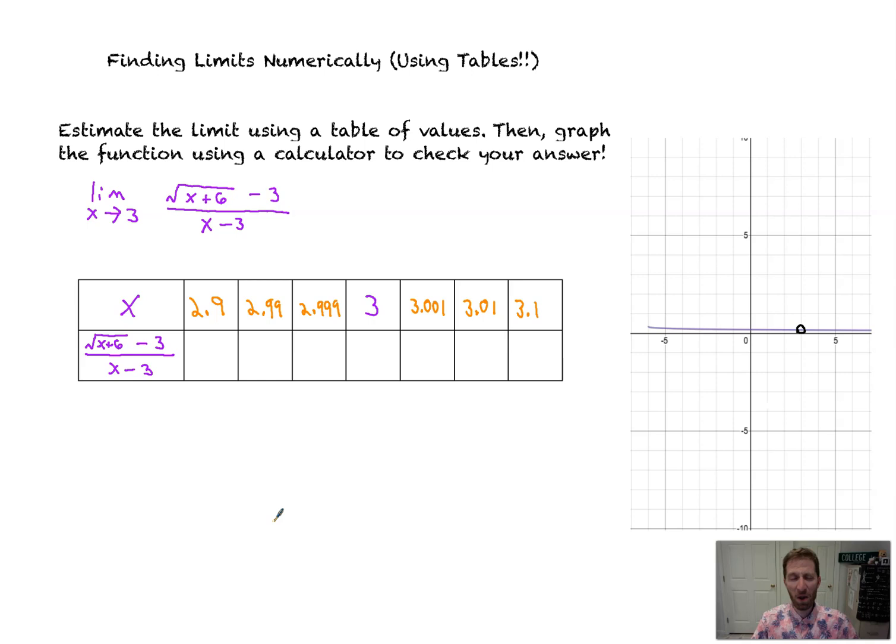And again, I've come prepared with my calculator values already plugged in. So we've got at 2.9, 0.1671. So we're just going to round to four decimal places. 0.1671. At 2.99, plugged into this function, please don't try this by hand, that would be terrible. We get 0.1667. And then 2.999 is going to give you 0.16667. Roughly that same number. 3, you're going to get an error. That's because there's a hole there.